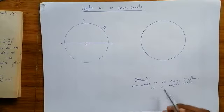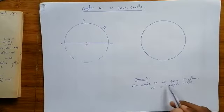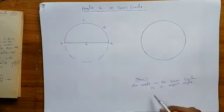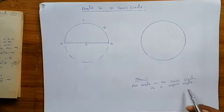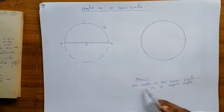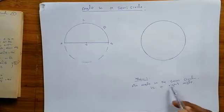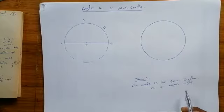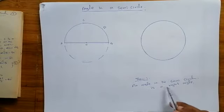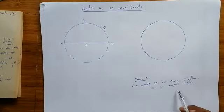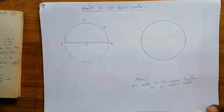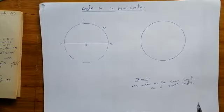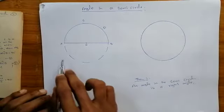An angle in the semi-circle is a right angle. In other words, an angle in the semi-circle is equal to 90 degrees.